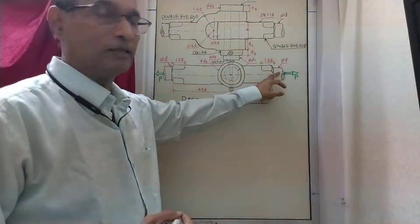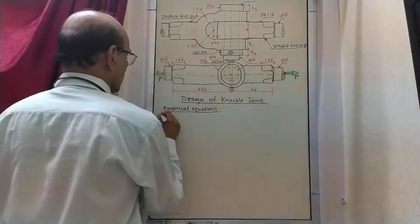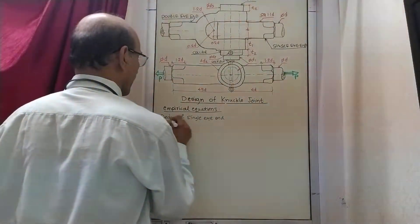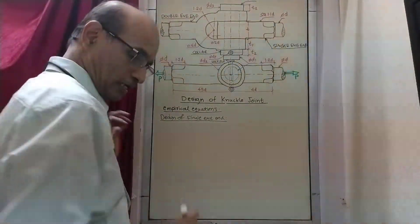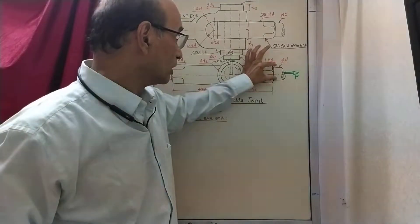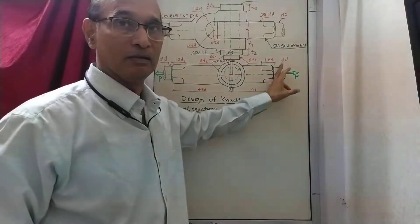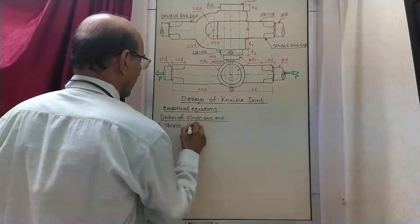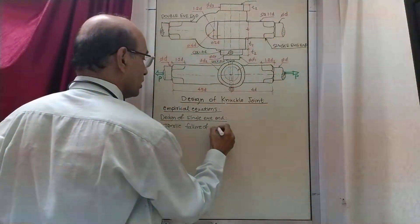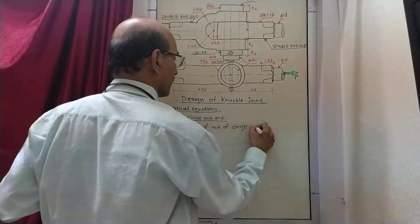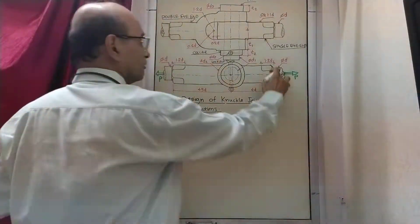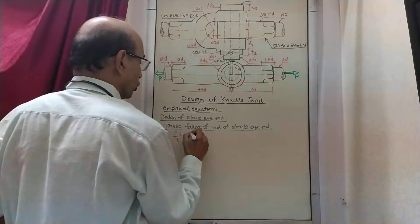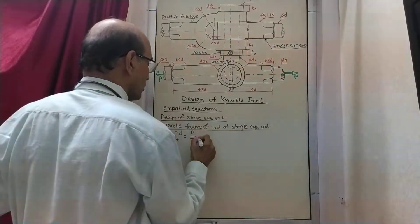We start with the design of the single eye end. The load applied is P, and because of this load the rod end of the single eye end might fail in the form of tensile stress. So we consider the tensile failure of the rod of the single eye end. The design equation is: design tensile stress FT equals load P divided by area, where the area of the cross section is π D² / 4.